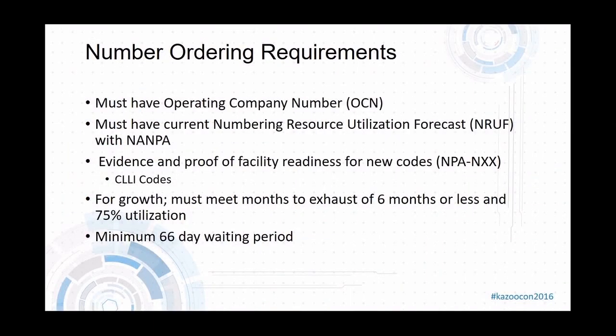Let's get into number ordering. What are the requirements from NANPA for a carrier to be able to order phone numbers? One of the first things a company must have is an Operating Company Number or OCN. They must also have a current number and resource utilization forecast with NANPA — for any area they want to serve, they must say how many numbers they expect to use and by when.